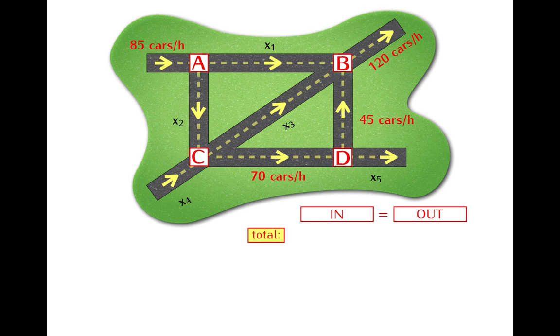And in our network we have two streets leading into the network. The street leading to the intersection A brings 85 cars per hour and the street leading to the intersection C brings x4 cars per hour. And this means that all together we have 85 plus x4 cars per hour entering the network.